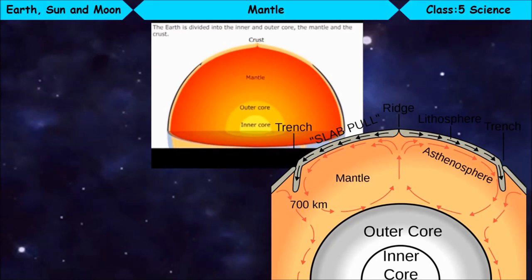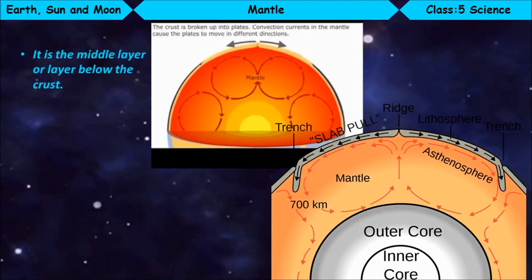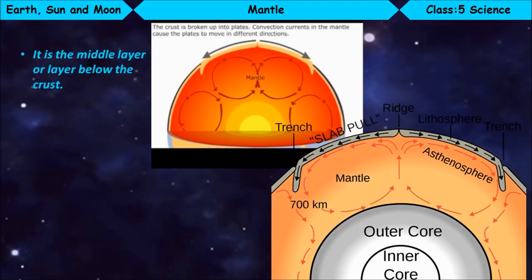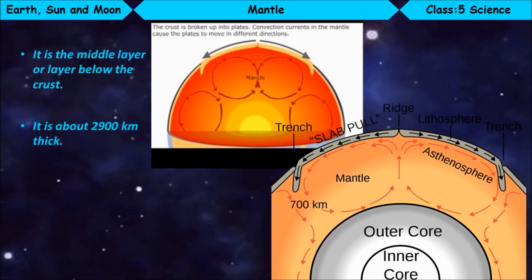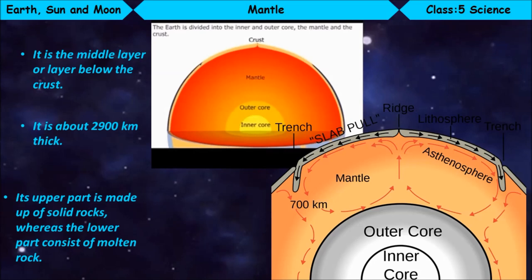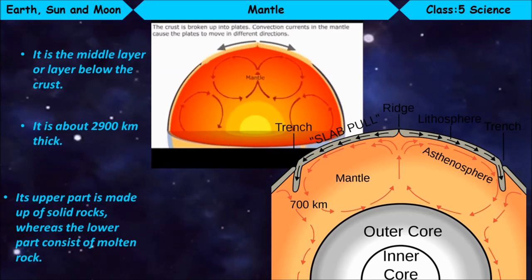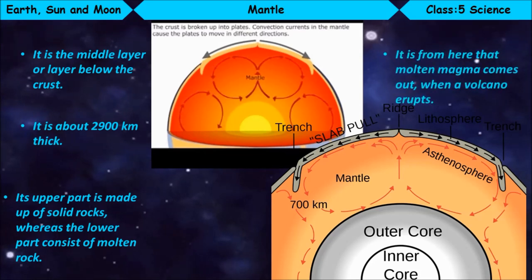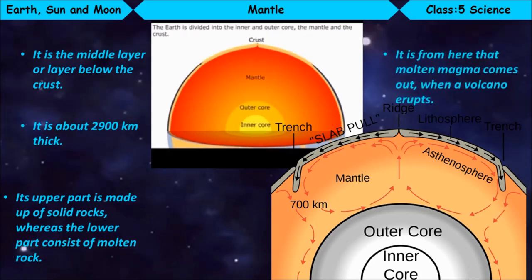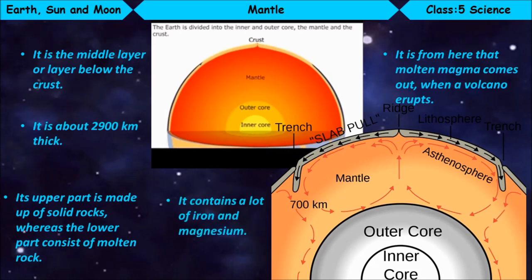Mantle. It is the middle layer or layer below the crust. It is about 2,900 km thick. Its upper part is made up of solid rocks, whereas the lower part consists of molten rock. It is from here that molten magma comes out when a volcano erupts. It contains a lot of iron and magnesium.